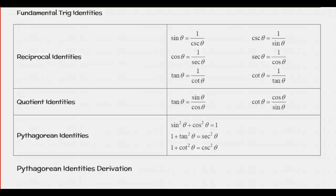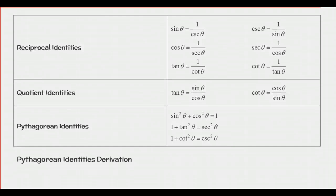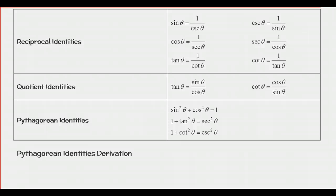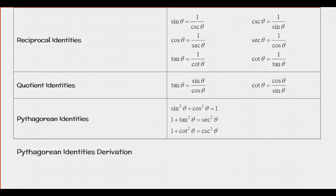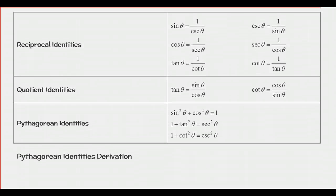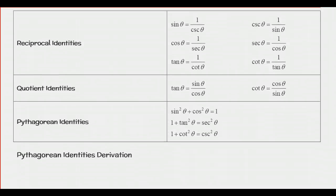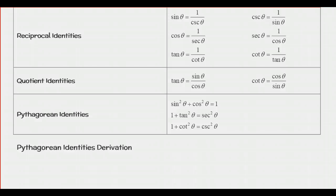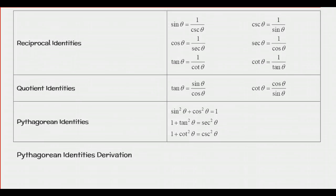It would be in your best interest to memorize these. Most of them you probably already know. The only new ones for you are going to be the Pythagorean identities if you haven't seen those before. But you should know the reciprocal identities because we talked about those.